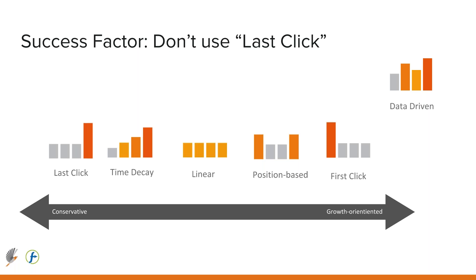Google made several attribution model choices available over a year ago and they're available right now. What I find is that someone in the company chooses one model based on opinion rather than data, and no one challenges it because they don't fully understand attribution modeling — resulting in a strategy of eeny meeny miny mo. Looking at the two extremes: the left is most conservative with a higher percentage of branded clicks; the most aggressive is on the right. We usually use the position-based model for a better mix. These models are complex to implement and measure, which is a great reason to handle this programmatically.